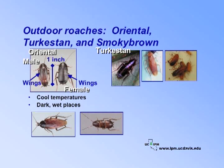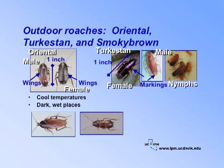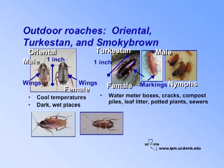The Turkestan roach, relatively new to California, is often mistaken for other cockroaches. Females are often confused with the oriental cockroach, but Turkestan females have cream-colored markings along the edges behind the head and around the short, rounded wings. Males can be confused with the American cockroach, but are smaller and have yellowish tan wings and cream-colored stripes along the edges. Adult females are one inch long; males are slightly smaller. Nymphs are half black and half dark red. Turkestan roaches are found in water meter boxes, cracks between blocks of poured concrete, compost piles, leaf litter, potted plants, and even sewer systems.